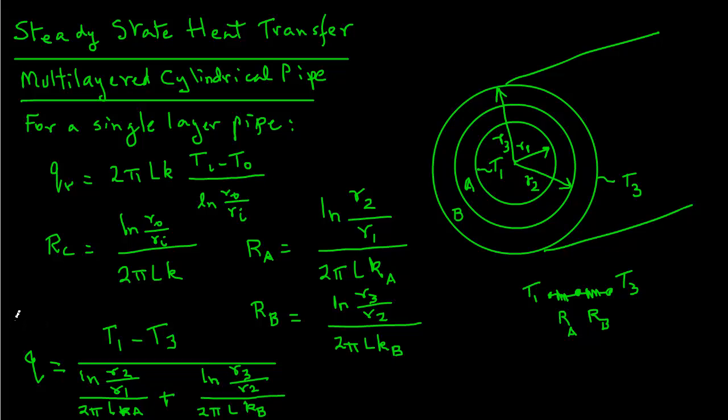So this is our final expression that gives us the rate of heat transfer in radial direction. When the inside surface temperature is T1, and the pipe has got another layer on it, and the outside surface temperature is T3. And then the two resistance values are shown in the denominator. This equation can then be solved to determine the rate of heat transfer under steady state conditions.